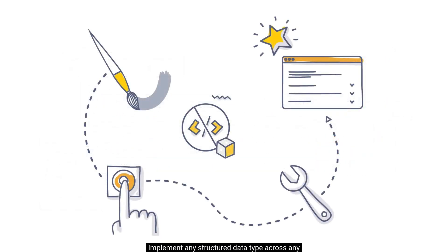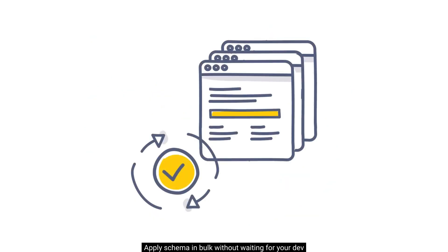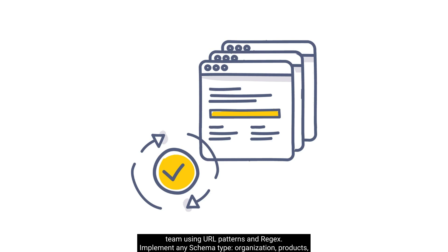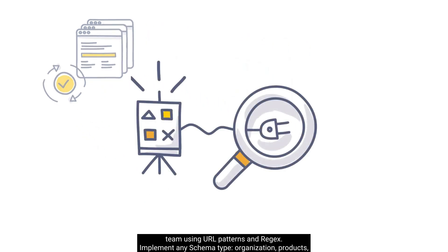Implement any structured data type across any number of pages — from FAQ schema to product, organization, breadcrumb, and more. Apply schema in bulk without waiting for your dev team using URL patterns and regex. Implement any schema type — organization, products, article, and more — to acquire rich results in SERPs.